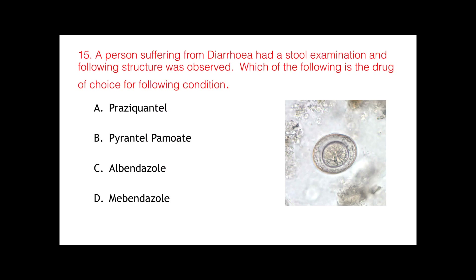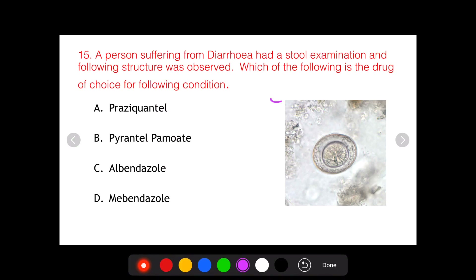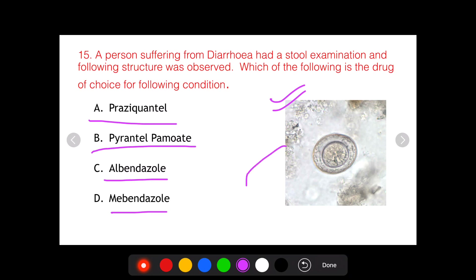The question asked: a person is suffering from diarrhea and had a stool examination done, and the following structure was observed. A picture was given to us in the exam. Which of the following is the drug of choice? The options given were praziquantel, pyrantel pamoate, albendazole, or mebendazole. In the stool examination, this is essentially an egg of a parasite, and they are asking what is the drug of choice for that parasite.